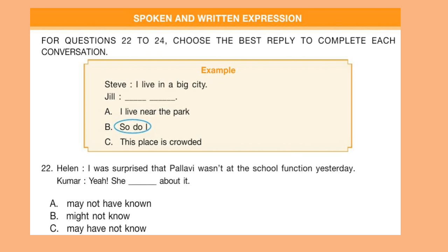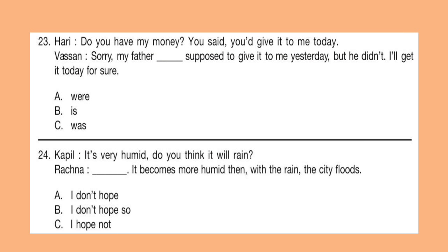Next section: Spoken and Written Expression. For questions 22 to 24, choose the best reply to complete each conversation. An example is given. Question 22 — Helen: I was surprised that Pallavi wasn't at the school function yesterday. Kumar: Yeah, she dash about it. Look at the options, select your answer, and write it down on paper. Question 23 — Hurry: Do you have my money? You said you would give it to me today.